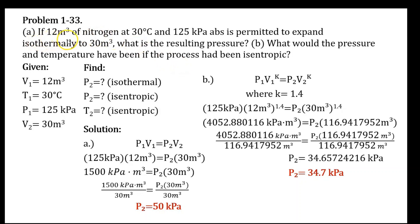If 12 cubic meters of nitrogen at 30 degrees Celsius and 125 kilopascal absolute pressure is permitted to expand isothermally to 30 cubic meters, what is the resulting pressure? Also, what could the pressure and temperature have been if the process had been isentropic?